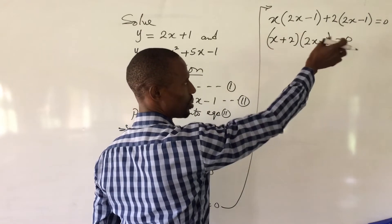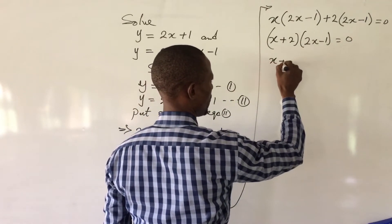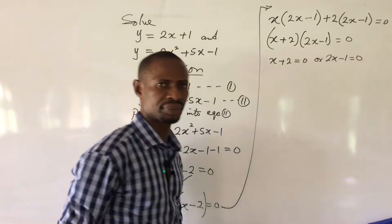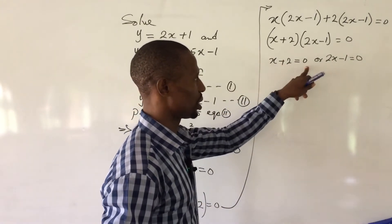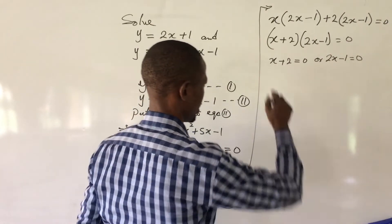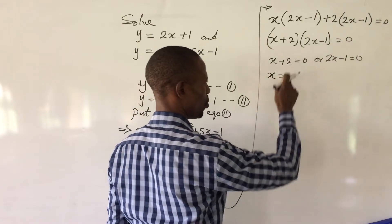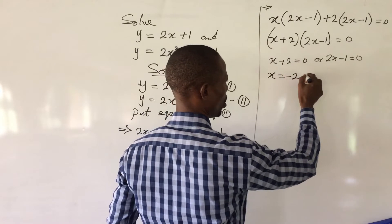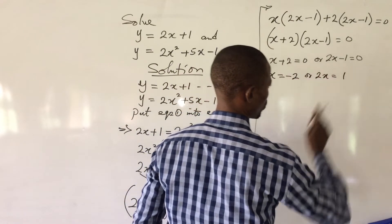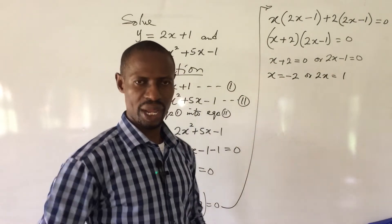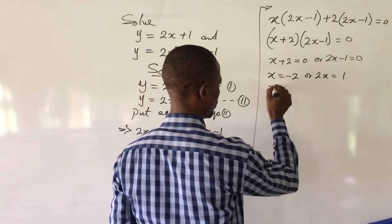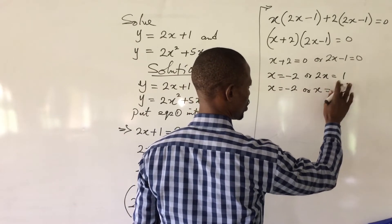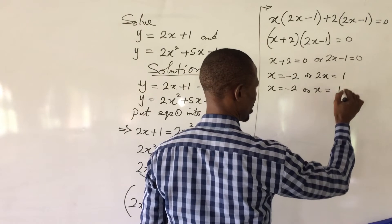We equate each factor to zero: x plus 2 equal to 0, or 2x minus 1 equal to 0. From the first, x equals minus 2. From the second, 2x equals 1, and dividing by 2 gives x equal to 1 over 2. So x equals minus 2 or x equals one half.